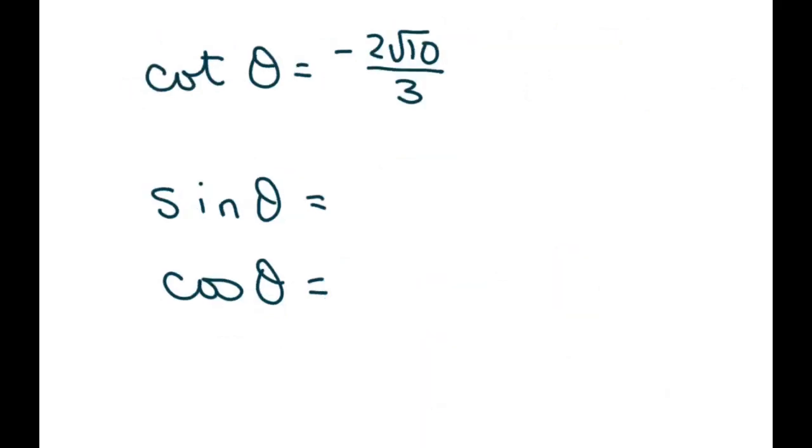And the last one we're going to do is this one. And so for this one, it's cotan. And cotan we know is x over y. And we know sine is y over r. Cosine is x over r. They didn't tell us on this one what quadrant we're in.